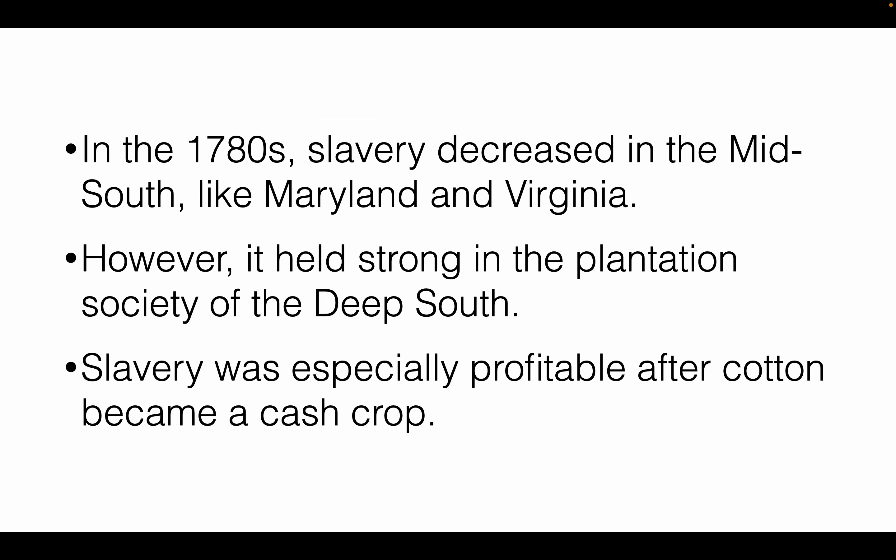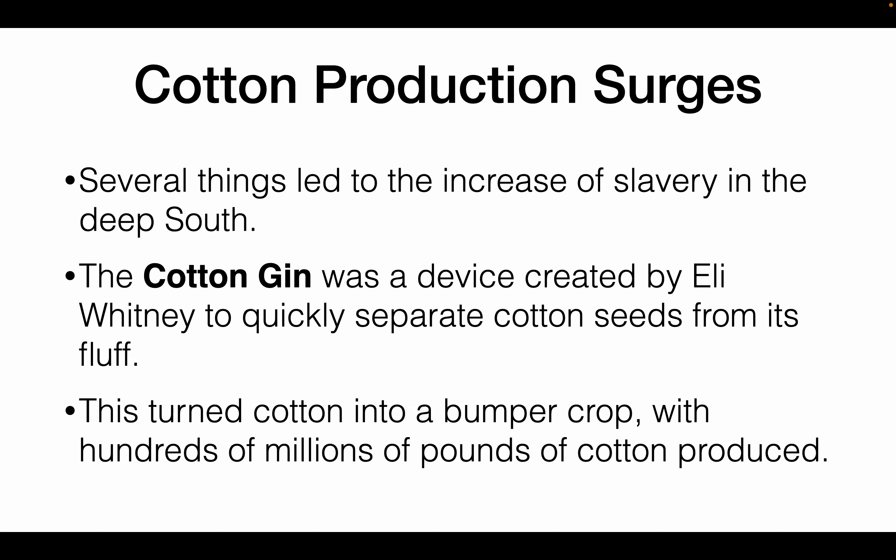Now let's look at agriculture in the South. Since the 1870s, slavery had actually been decreasing in the South, especially in the Mid-South. However, it changed after cotton became a massive crop. The biggest factor was the invention of the cotton gin by Eli Whitney — a device to quickly separate the hard-to-pick seeds from cotton fluff — which turned cotton into a huge crop with hundreds of millions of pounds produced every year.